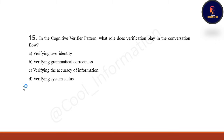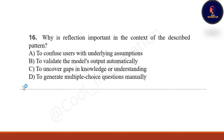Next question: In the consecutive verifier pattern, what role does verification play in the conversation flow? Options are verifying user identity, verifying grammatical correctness, verifying the accuracy of information, or verifying system status. Correct option is C — verifying the accuracy of information.